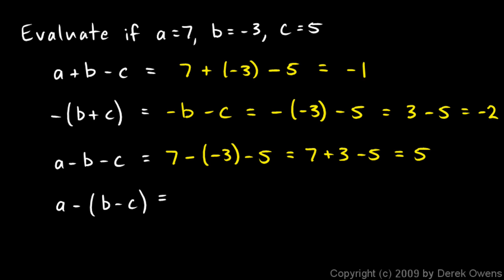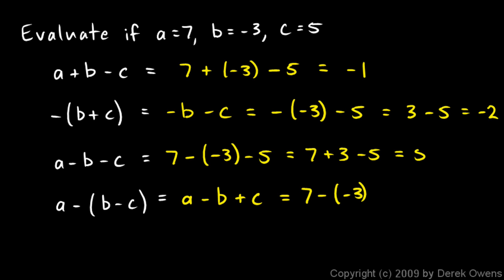And then in this last one, it looks very similar. Here we have a minus (b minus c) — the b minus c is in parentheses. So this negative sign is going to change the sign of each of these things. I'm going to keep my a, then minus b, but the negative negative c becomes a plus c. Now let's rewrite with the values: 7 minus b — b is negative 3 — plus c, and c is 5. So 7 minus negative 3 is the same as 7 plus 3, and then plus 5. 7 plus 3 is 10, plus 5 is 15.